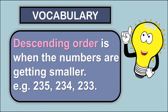Now let's look at descending order. Descending order is when the numbers are getting smaller. Example: 235, 234, 233.